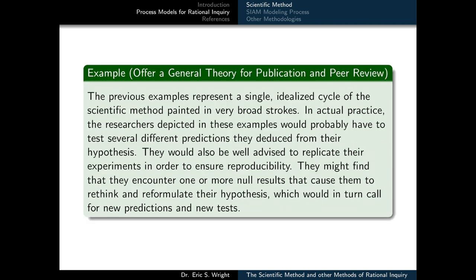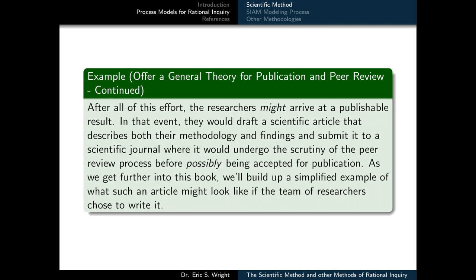The previous examples represent a single idealized cycle of the scientific method painted in very broad strokes. In actual practice, the researchers depicted would probably have to test several different predictions they deduced from their hypothesis. They would also be well advised to replicate their experiments in order to ensure reproducibility. They might find they encounter one or more null results that cause them to rethink and reformulate their hypothesis, which would in turn call for new predictions and new tests. After all this effort, the researchers might arrive at a publishable result.